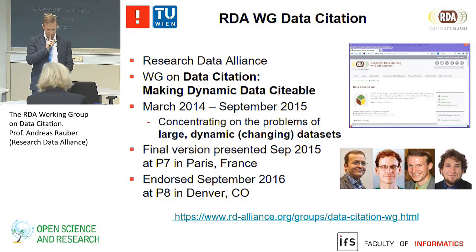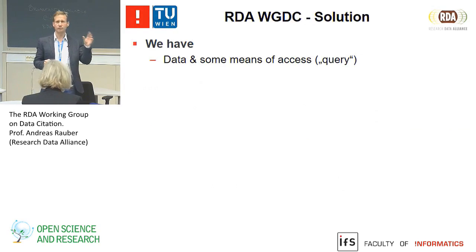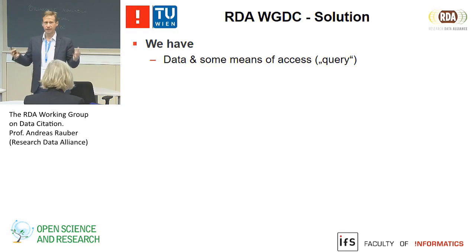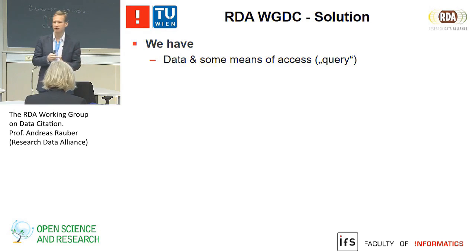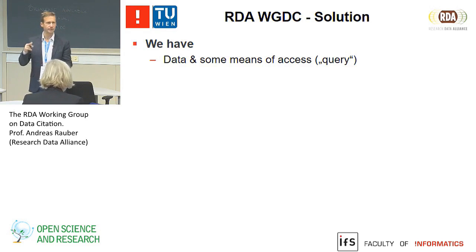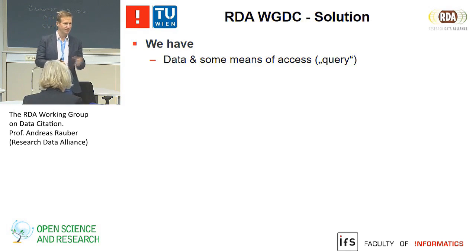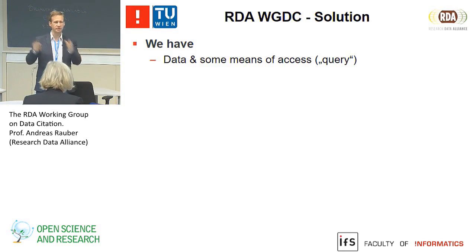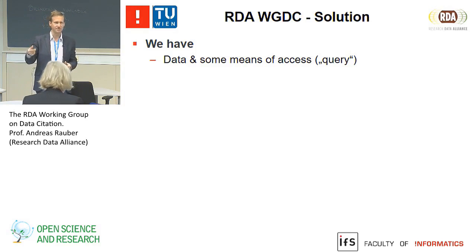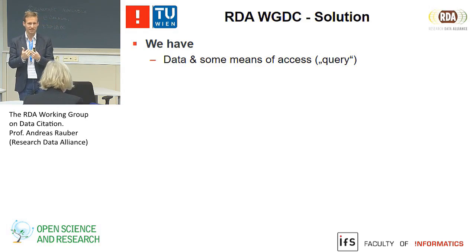In a nutshell: we have data—and when I say data, I'll use relational databases, SQL-style data, as an example, but it applies to any kind of data: CSV files, XML data, triple stores, file repositories with thousands of files. And we have some means of accessing that data—let's call that a query, whether it's a SQL query, a SPARQL query, or a directory listing with certain parameters on a file system. All of those are queries that allow you to retrieve subsets of data.